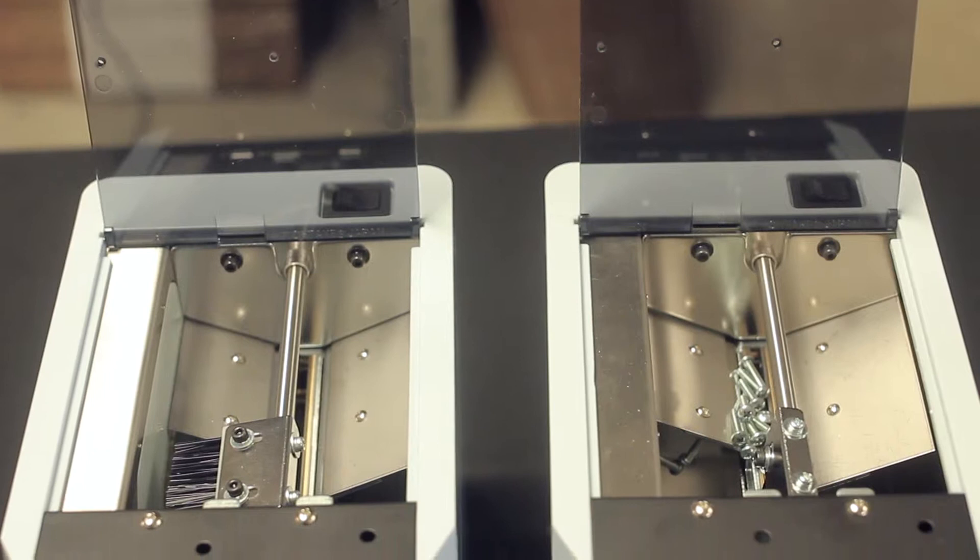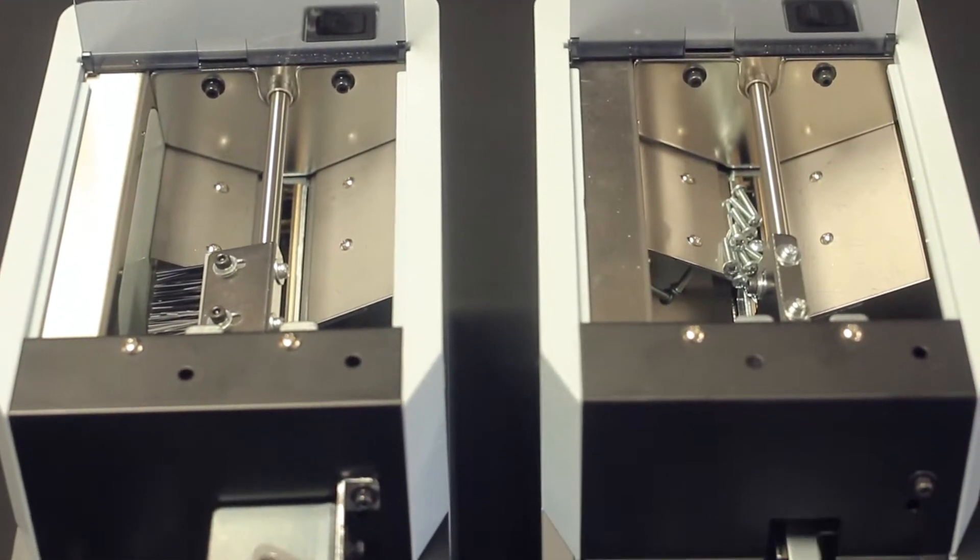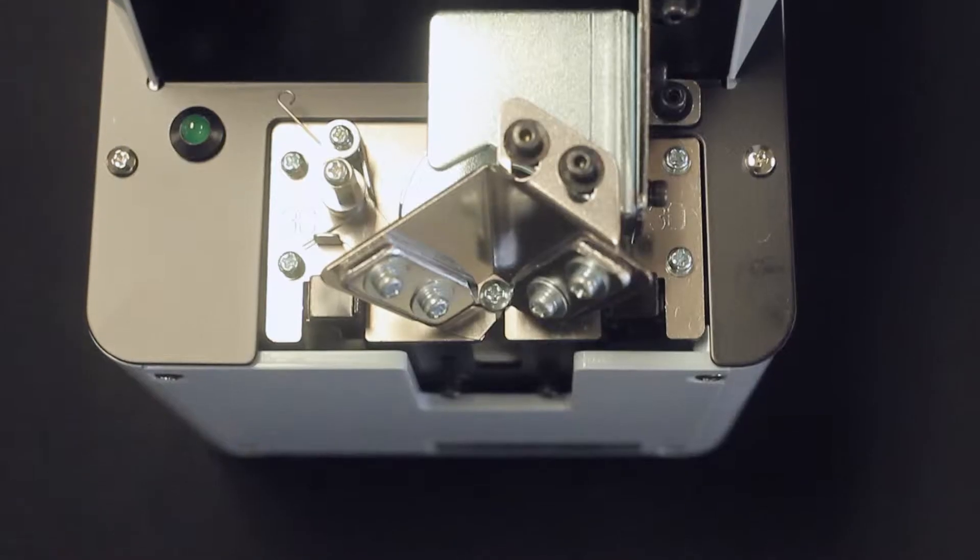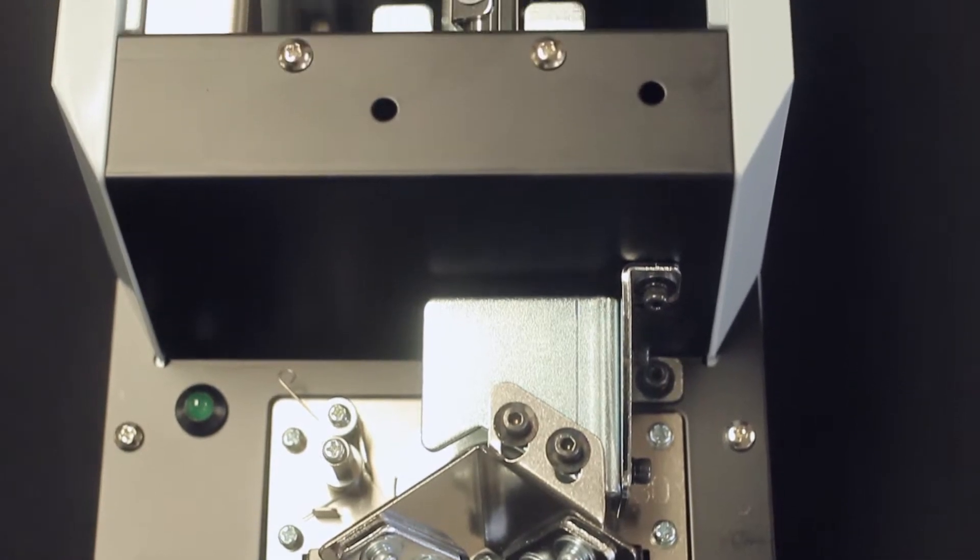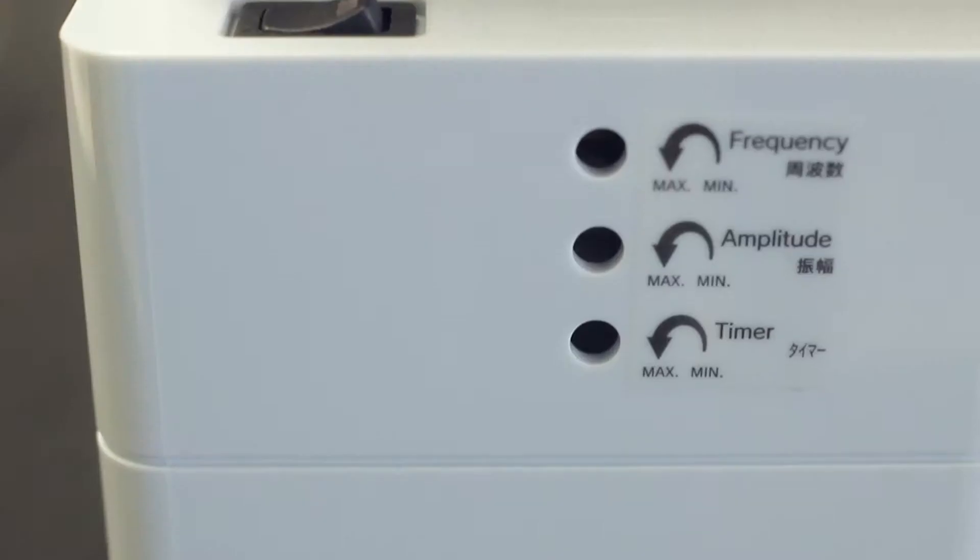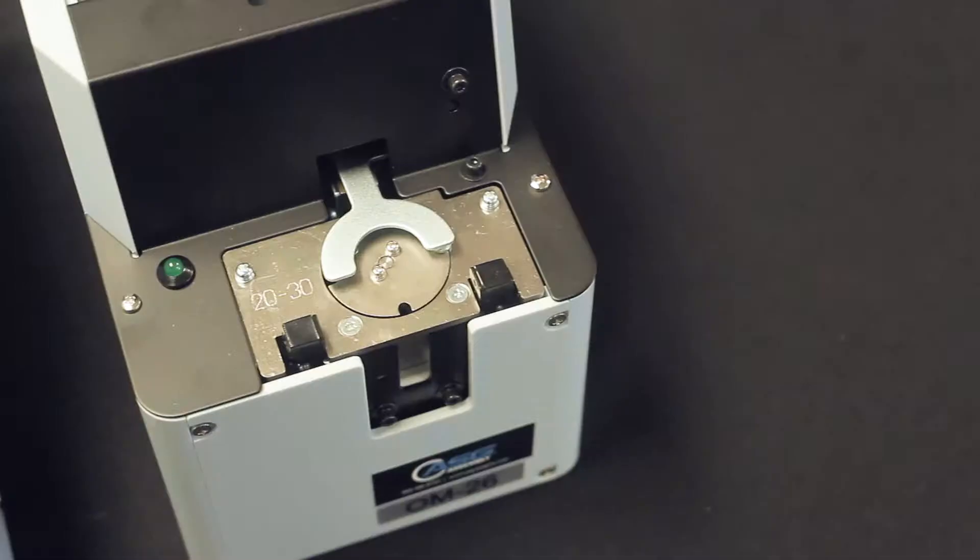Each model is supplied with the appropriate rail assembly for its rated screw size. Rails are interchangeable if a different capacity or screw diameter size is needed. ASG technical service can assist. OM series are available for manual and robotic applications.